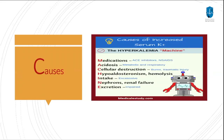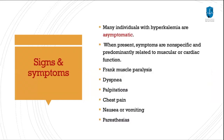Here is a summary of the most common causes that can lead to hyperkalemia. In our approach, we see patients using a lot of ACE inhibitors, so be careful when you see a patient using this type of medication who presents with hyperkalemia. Other causes include acidosis — either metabolic or respiratory — burns and traumatic injury, hypoaldosteronism, hemolysis, excessive intake, renal failure, and excretion impairment.